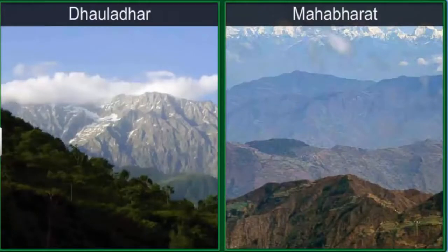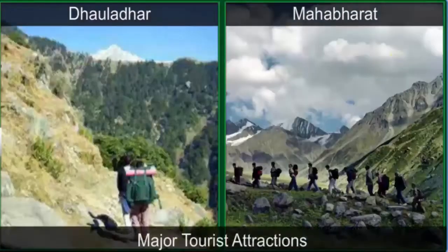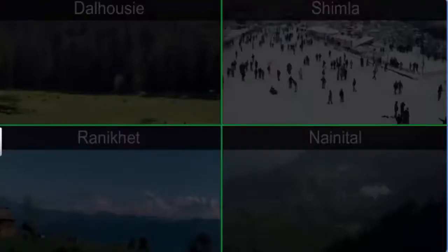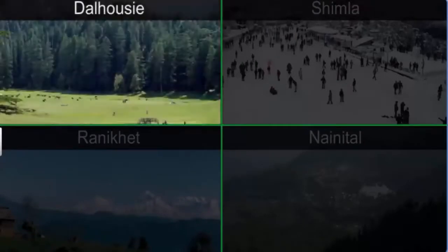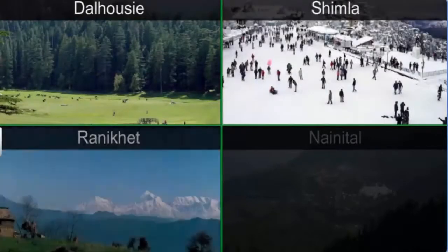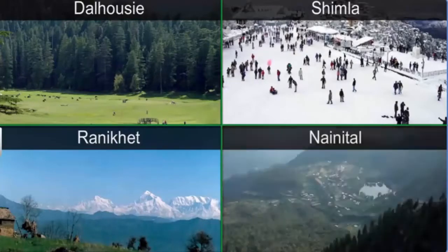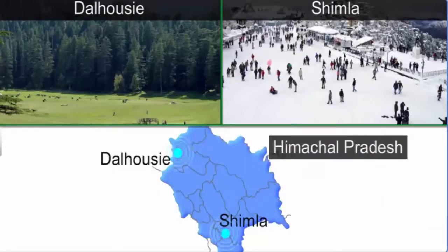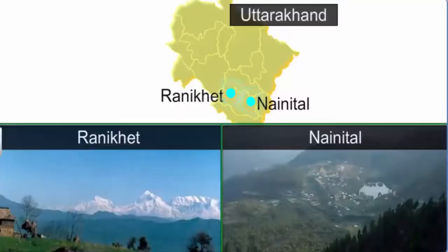These ranges are famous for their beauty and are a major tourist attraction worldwide. The Himachal Range is also well known for its hill stations such as Dalhousie, Shimla, Ranikhet, and Nainital. Dalhousie and Shimla are located in Himachal Pradesh, while Ranikhet and Nainital are part of Uttarakhand.